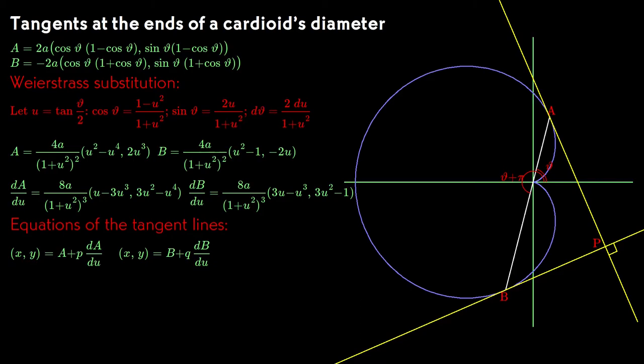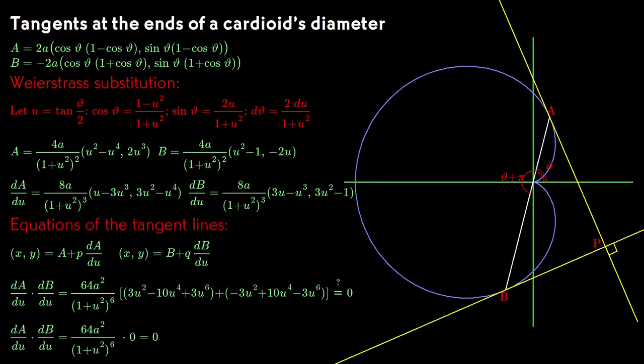Remember that the lines are perpendicular if and only if the inner product of the derivatives is zero. So we expand out the inner products, and when we combine like terms, the inner product does indeed vanish. So we've proven the first part of our theorem. The tangents are perpendicular.